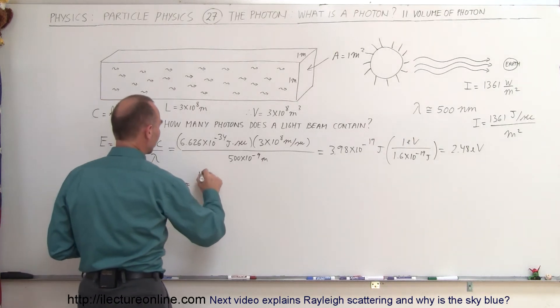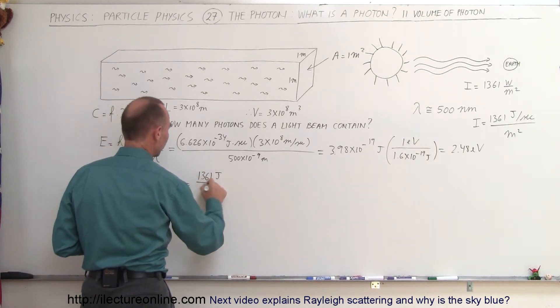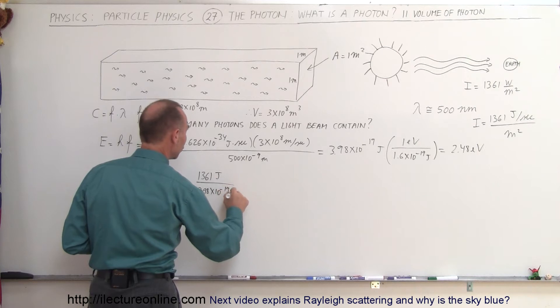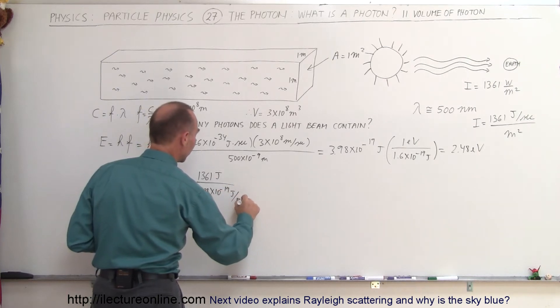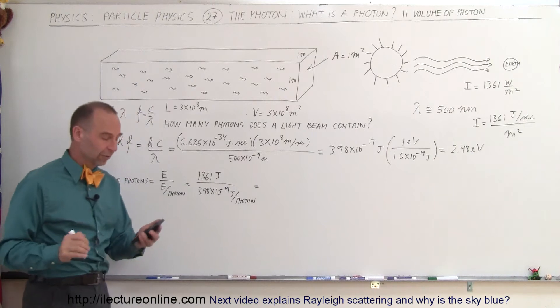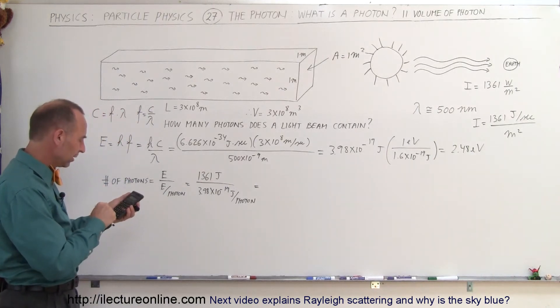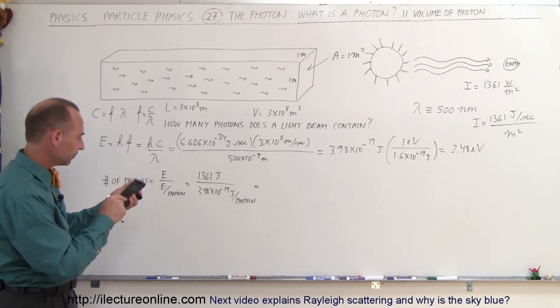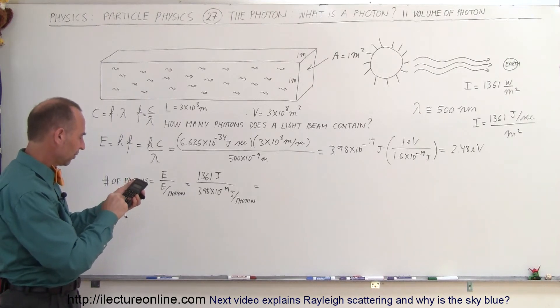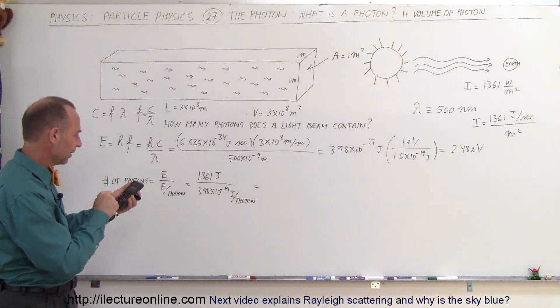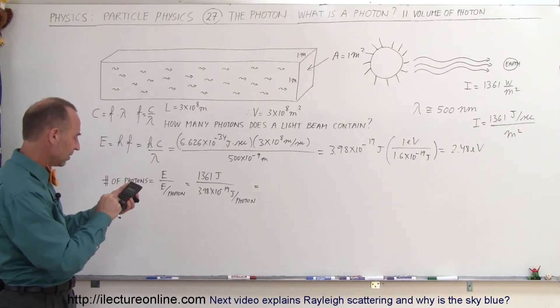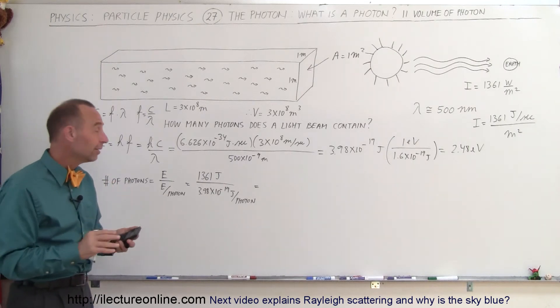That's equal to the energy in the beam divided by the energy per photon. So in this case, that would be 1,361 joules divided by the energy of a photon, which is 3.98 times 10 to the minus 19 joules per photon. And that will give us the number of photons. So let me go back to that number that I had. So 6.626 e to the 34 minus times 3 e to the 8 divided by 500 e to the 9 minus. Okay, so I don't have a roundup error.